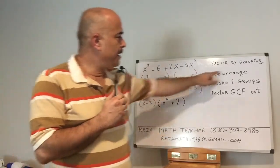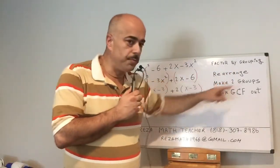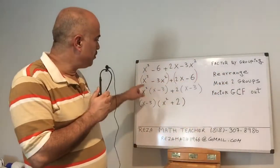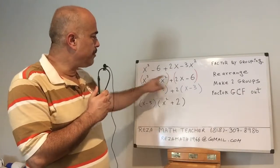After you rearrange the problem, the next step is to make two groups. So the first two terms make the first group and the last two terms make the second group.